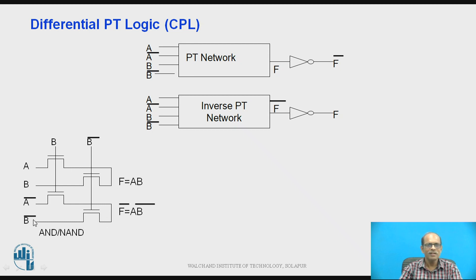And for lower circuit you can apply A bar B plus B bar. So A bar B plus B bar is A bar plus B bar. That is equal to AB bar. So this is NAND.